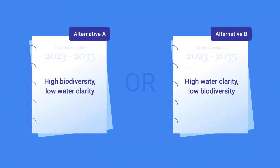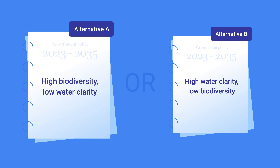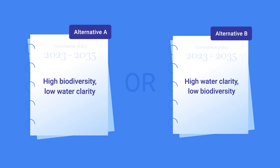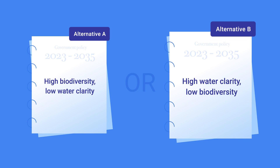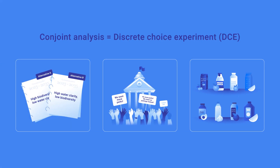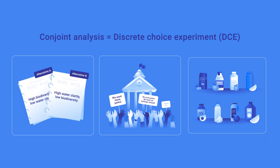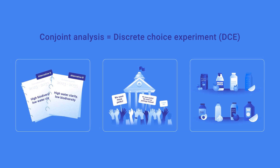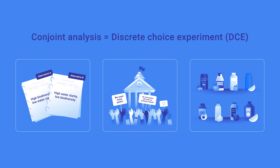For example, when managing a country's freshwater resources, would citizens prefer to focus on maintaining high biodiversity or high water clarity? Then you can incorporate those preferences into your management policies. This breadth of application means that Conjoint Analysis is also known by other names, depending on the area. Another common name is a Discrete Choice Experiment, or DCE.